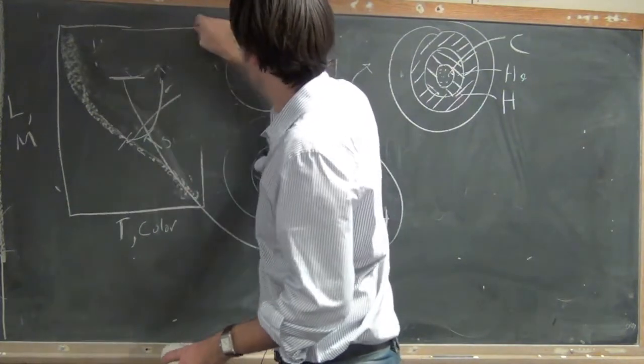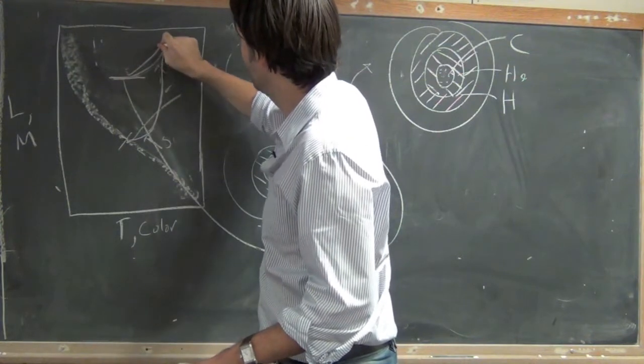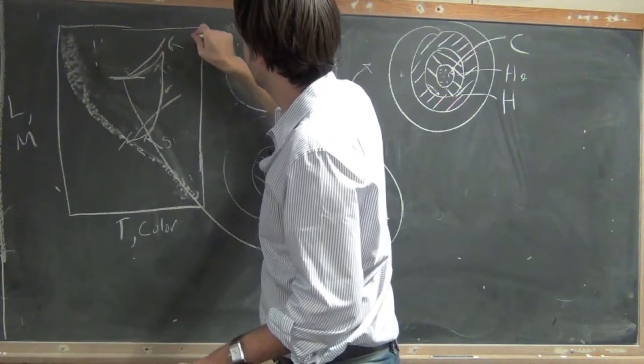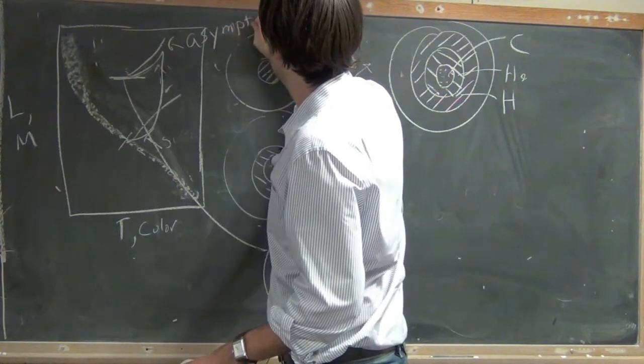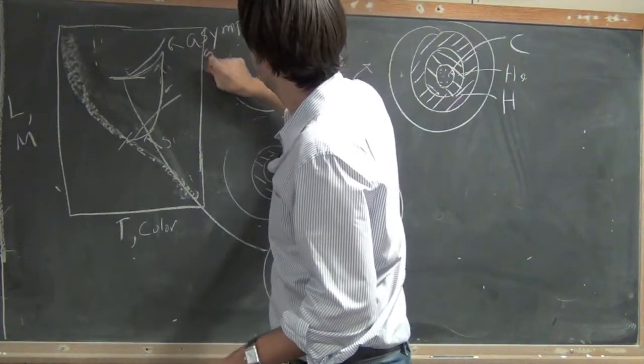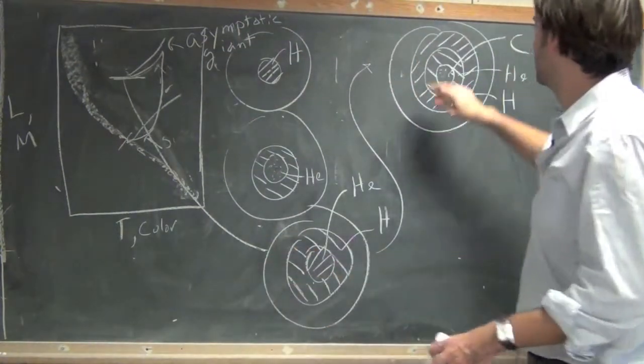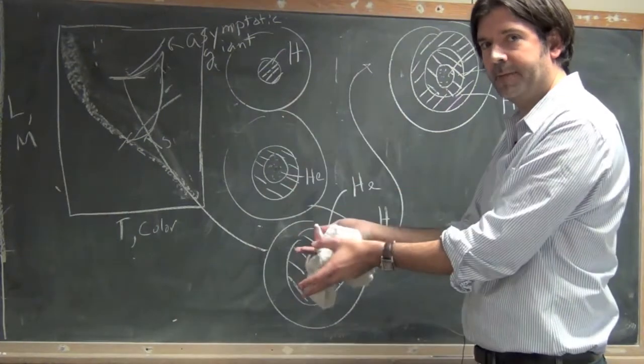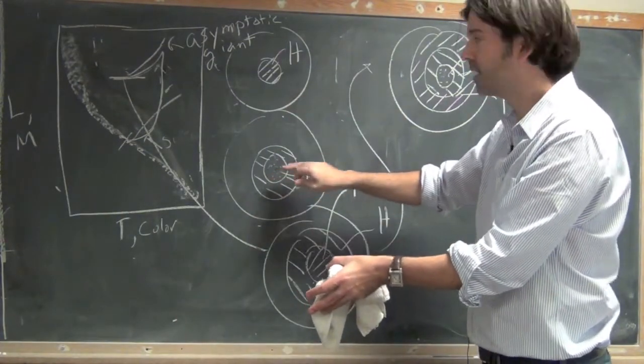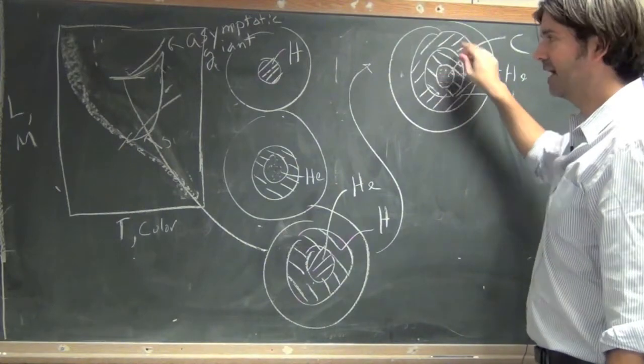So we move off of the horizontal branch, we move off of here and up into the asymptotic giant branch, where you look very similar to the red giant, in that you've got shell burning and you've got an ashen core, but you have a carbon ash core and helium and hydrogen burning shells.